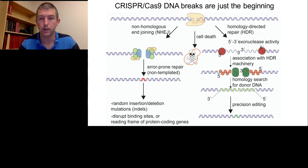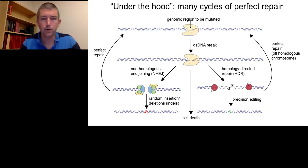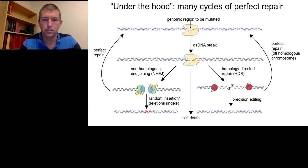The outcome of HDR is a precise change defined in the donor DNA, which can be very useful for changing amino acids to particular substitution sequences or changing binding sites to a specific site. Under the hood of this process are many cycles of perfect repair. It's not clear exactly how many cycles occur before an endpoint is reached — which is either NHEJ, cell death, or HDR editing. The cell does not always repair the cut with a change; in many cases it will repair it perfectly and get cut again.